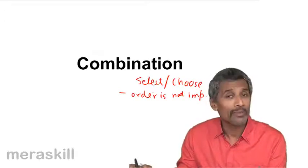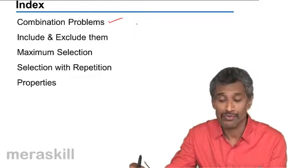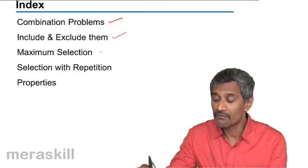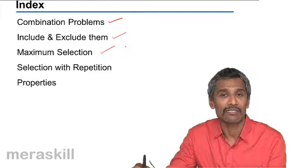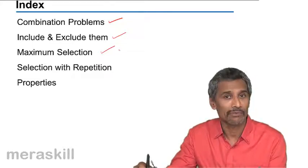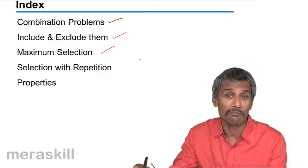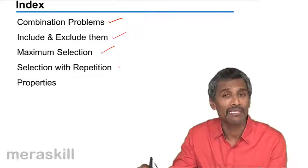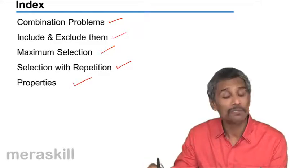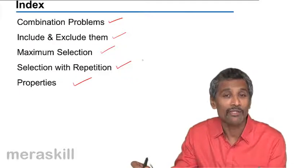Let's take a quick look at what we plan to cover in this topic of combination. We will take up basic problems to learn how to use the formula, then the concept of including and excluding specific terms, then maximum selection using terms like 'at least' and 'at most' where certain items must be included. Then selection with repetition — in permutation we have n factorial upon p factorial into q factorial, and similarly here we have selection with repetition. We'll also cover questions on properties and some uncommon problems to consolidate our learning.